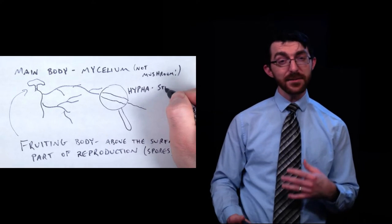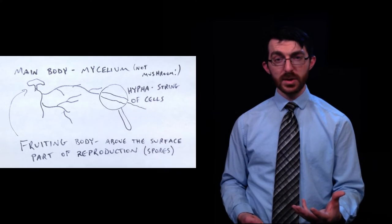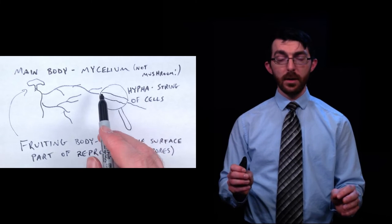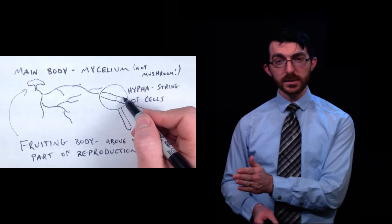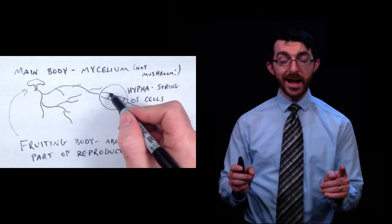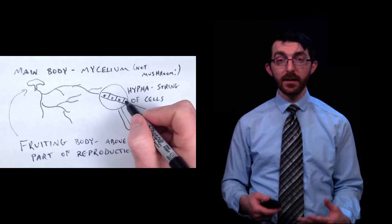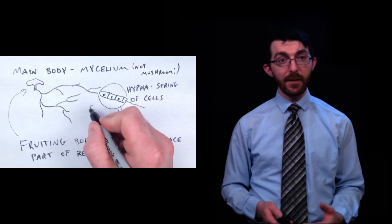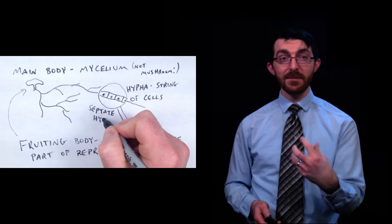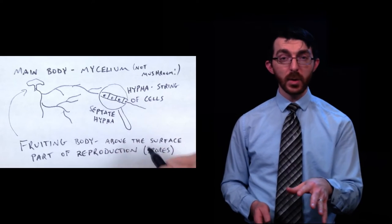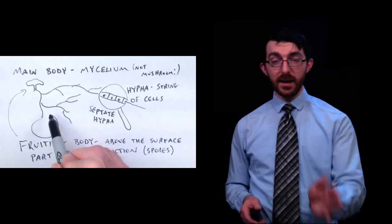One kind is called septate hypha. Imagine you've got a long string of cells. If you have those cells broken up by their cell walls, it would be like a long hallway of rooms and every room is separated from the next room by a wall. That would be a septate hypha. In a septate hypha, the cytoplasm can pass between cells through pores. If all of those rooms are separated by walls, then at least they all have doors so that cytoplasm can pass through them.